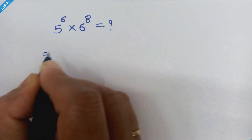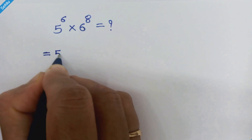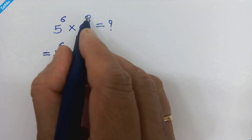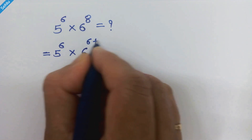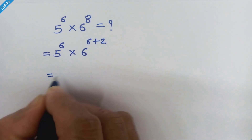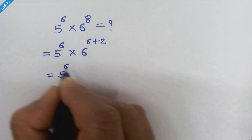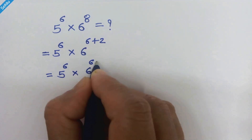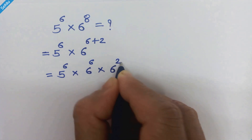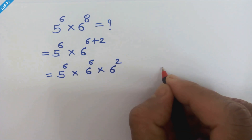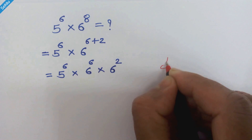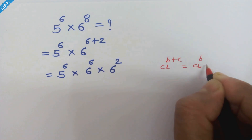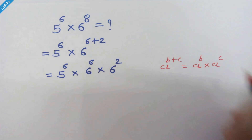We can write it like 5 raise to 6 times 6 raise to — now this 8 can be written as 6 plus 2. Now in the next step we can write it like 5 raise to 6 times 6 raise to 6 times 6 square. We can write this because if we have a raise to b plus c, then it can be written as a raise to b times a raise to c.